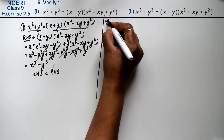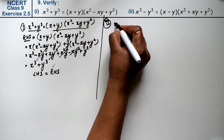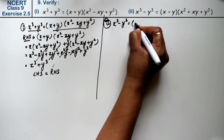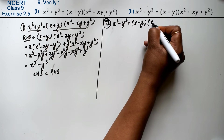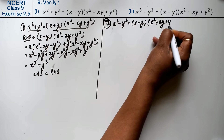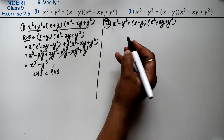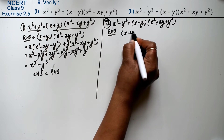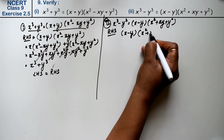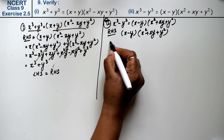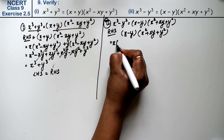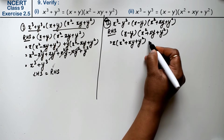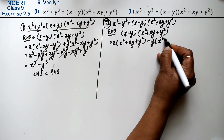Let's do the second part. Second part: verify x cube minus y cube equals x minus y times x square plus xy plus y square. To prove this, I take the right-hand side: (x - y)(x² + xy + y²). Multiplying x into the full bracket x² + xy + y², then minus y multiplied into x² + xy + y².